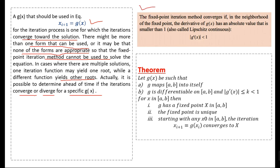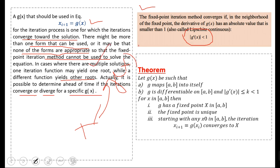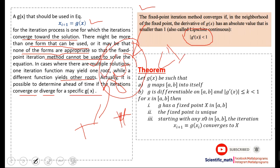The fixed point iteration method converges if, in the neighborhood of the fixed point, the derivative of g(x) has an absolute value less than 1 — the Lipschitz continuous condition. When the absolute value of g'(x) at some point is less than 1 the method converges; otherwise it diverges. We will verify this condition with an example in the next lecture.